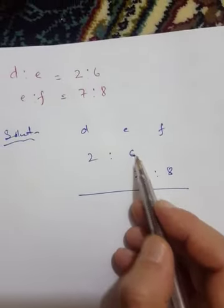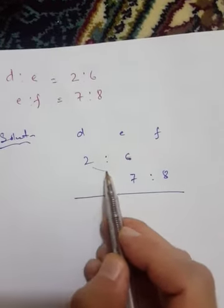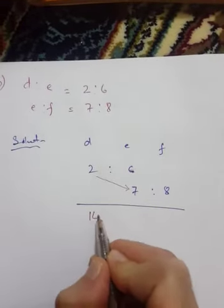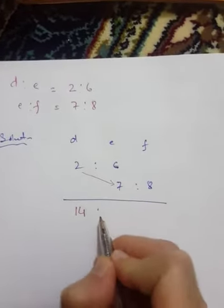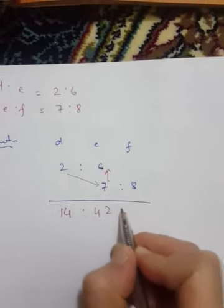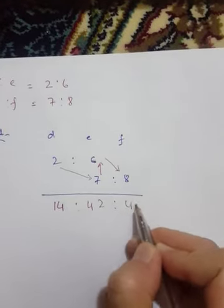One method is to try to make them equal, but we'll use a different approach: cross multiply. Multiply one side by 7: 7 times 6 equals 42. Multiply the other side by 8: 8 times 6 equals 48.